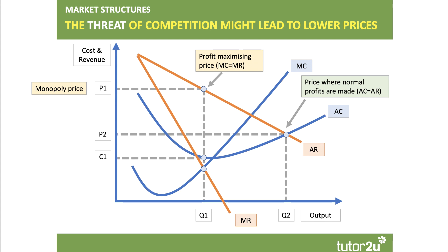In fact, if the market became perfectly contestable, then the existing firm would probably have an incentive to cut their price to P2, shown in our diagram, at output Q2. That's a price where normal profits are made because average cost and average revenue are equal. Otherwise, new firms would enter the market until normal profits are made.